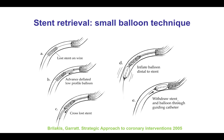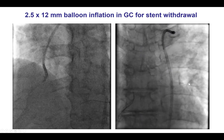If we decide to retrieve, the most common and simplest technique is that of the small balloon, in which a small 1.5 or 1.2mm balloon is advanced through the lost stent. The balloon is then inflated and pulled back, hopefully taking with it the lost stent back into the guiding catheter.